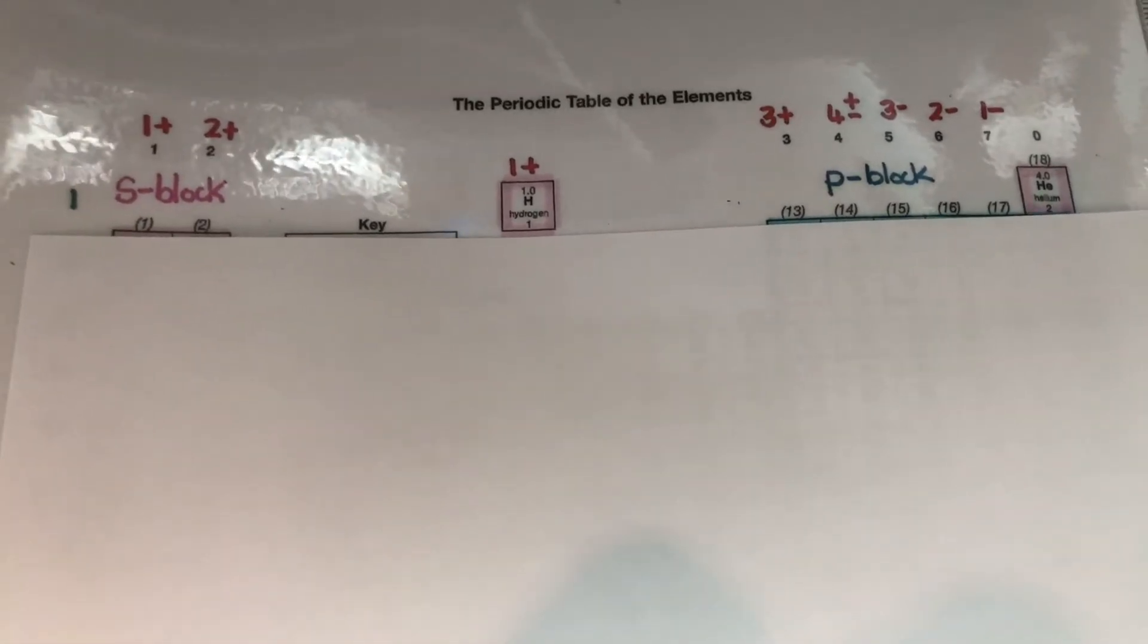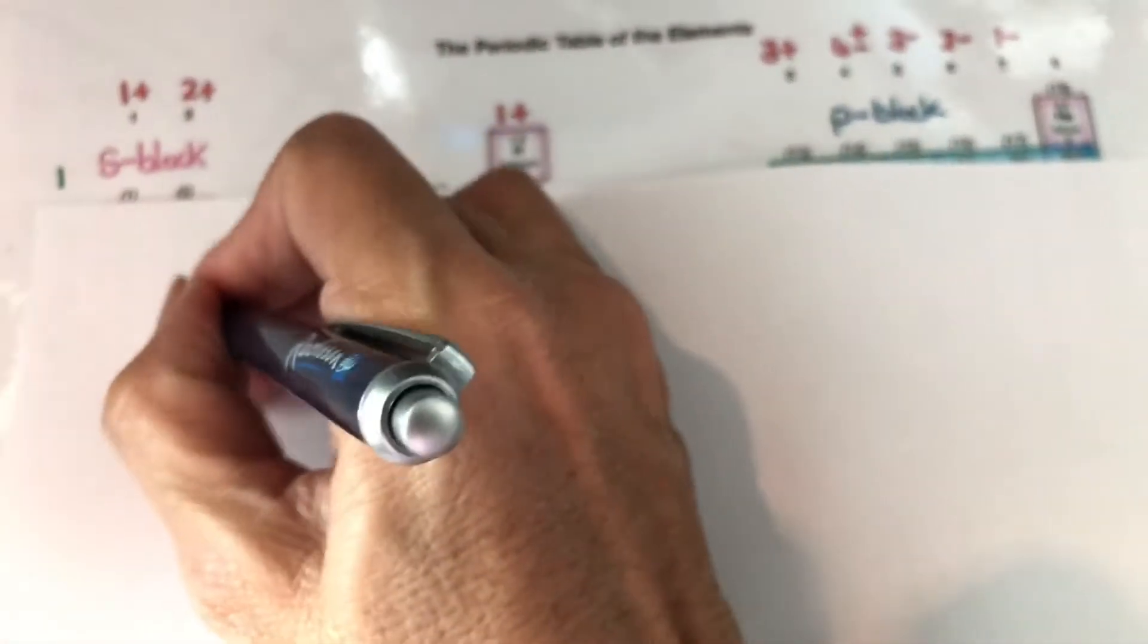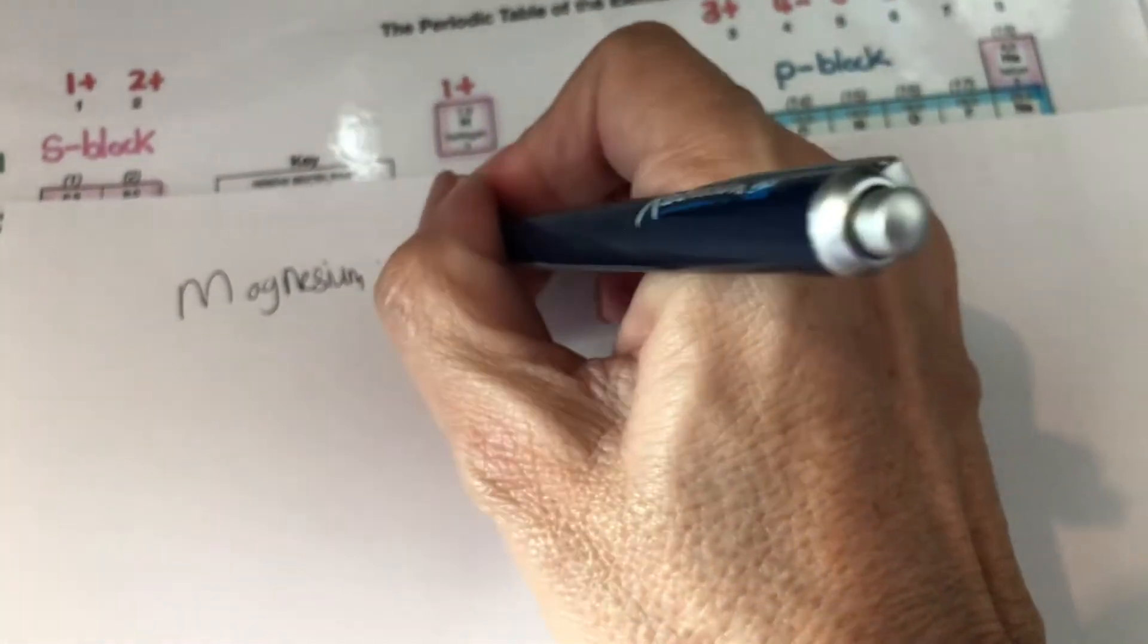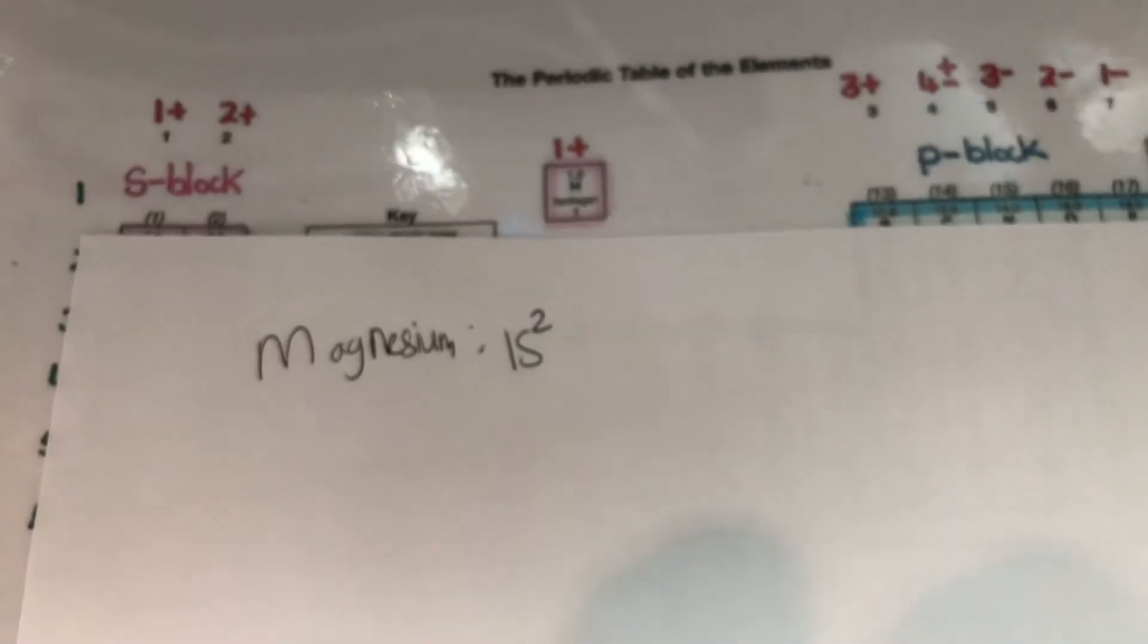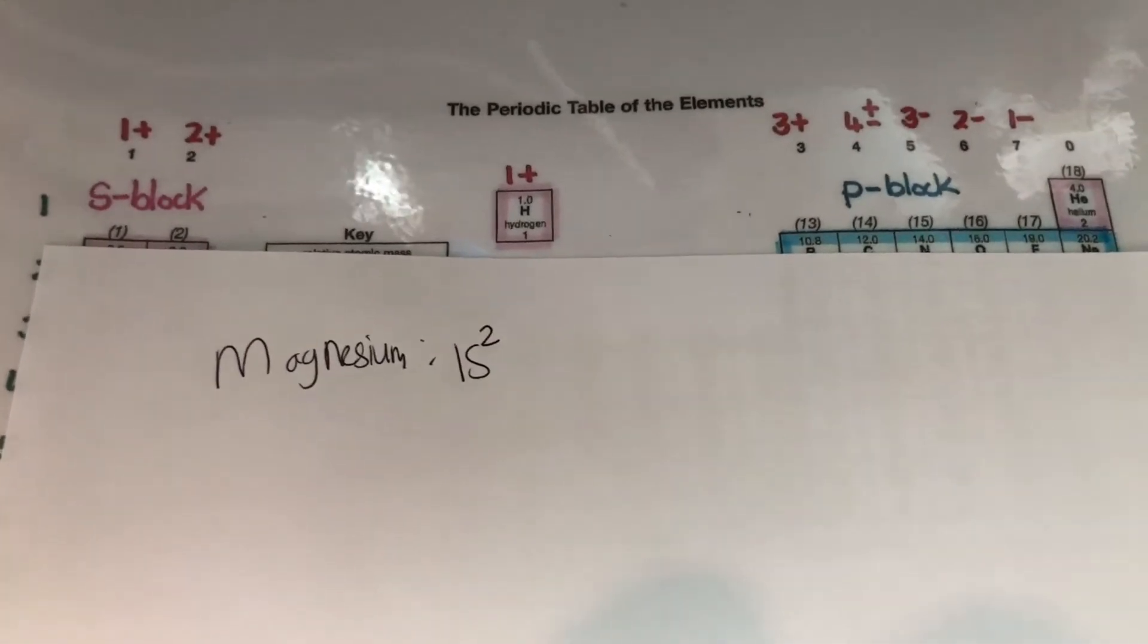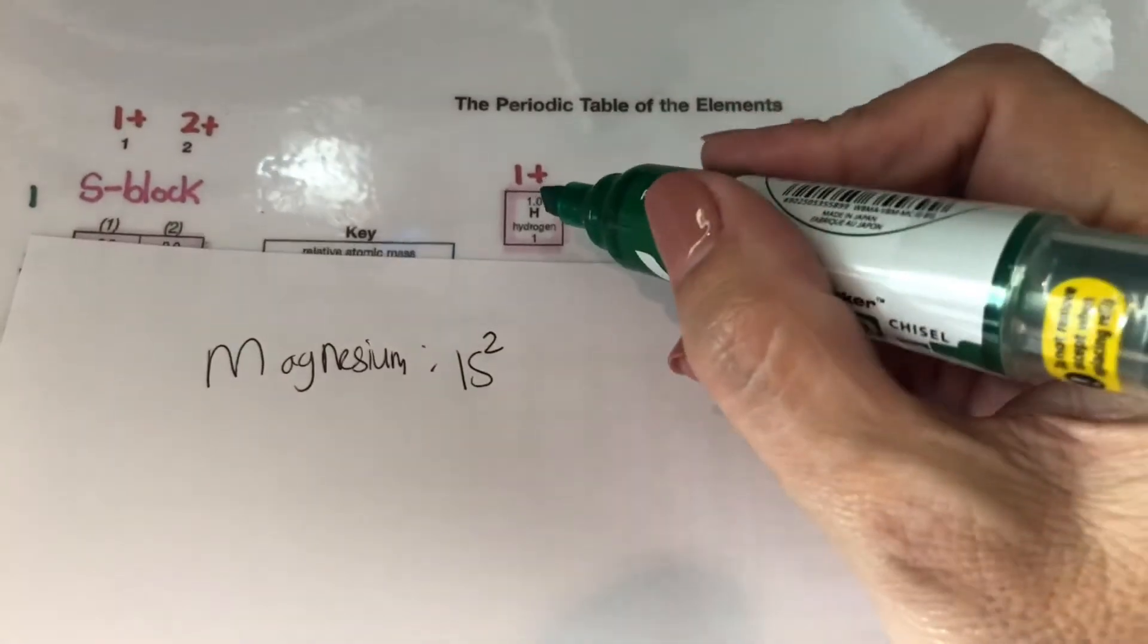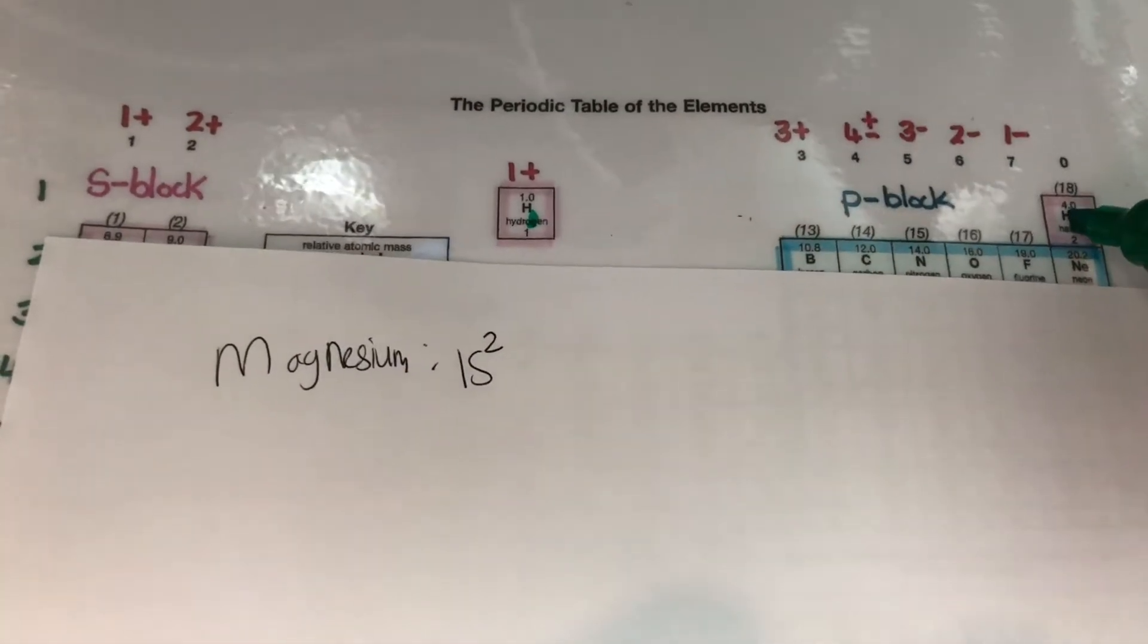So if I want to write the SP notation for say magnesium I would start with 1S and 1S is going to have two electrons. How do I determine that? This is the first energy level and this is my first electron and this is my second electron.